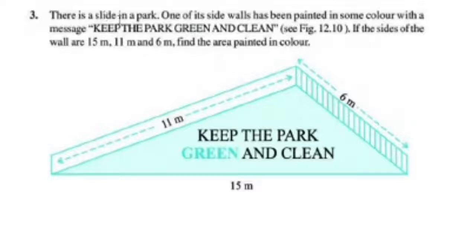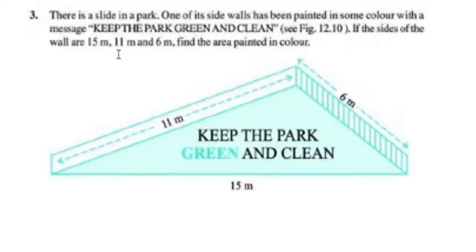There is a slide in a park. One of its side walls has been painted in some color with the message 'Keep the park green and clean.' If the sides of the wall are 15m, 11m, and 6m, find the area painted in color.